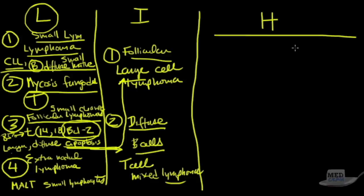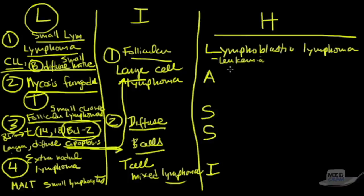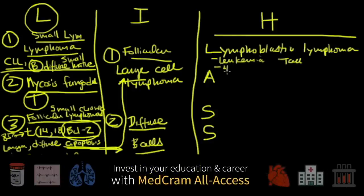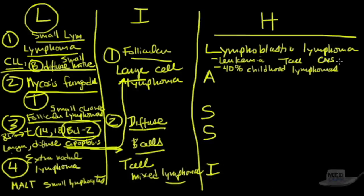Let's go to high grade. These are the ones we don't like to see. Typically we see blasts that are not cleaved and are large. There's five of them. Instead of writing five numbers, I'll give you my mnemonic: LASSI, like the dog. The L stands for lymphoblastic lymphoma. This is the one that can go to leukemia. It is T cell, typically. Unfortunately, it accounts for 40% of childhood lymphomas and can go to the CNS and skin.